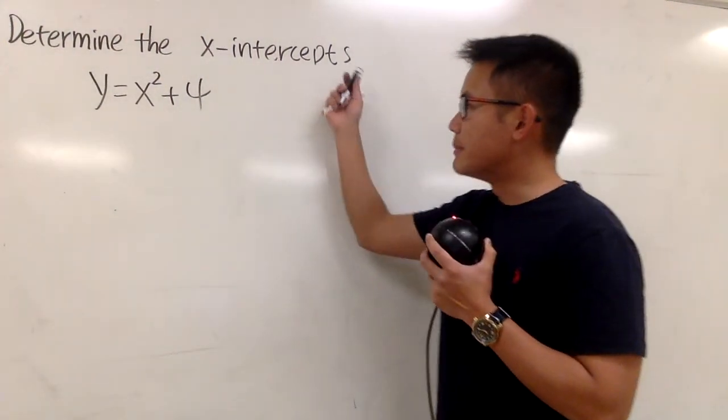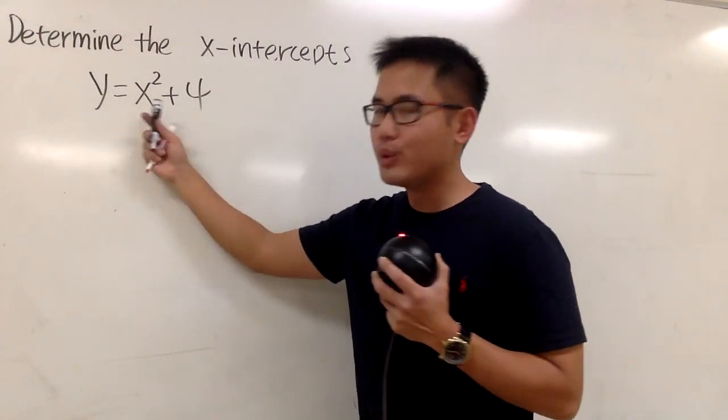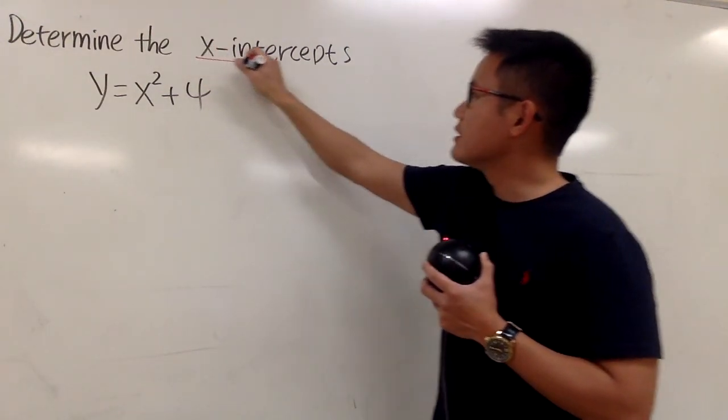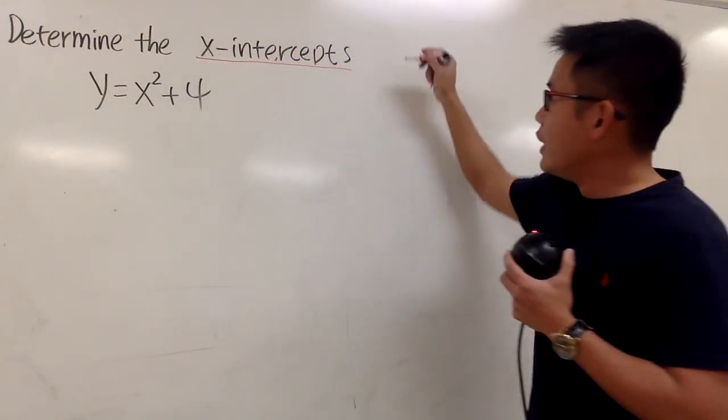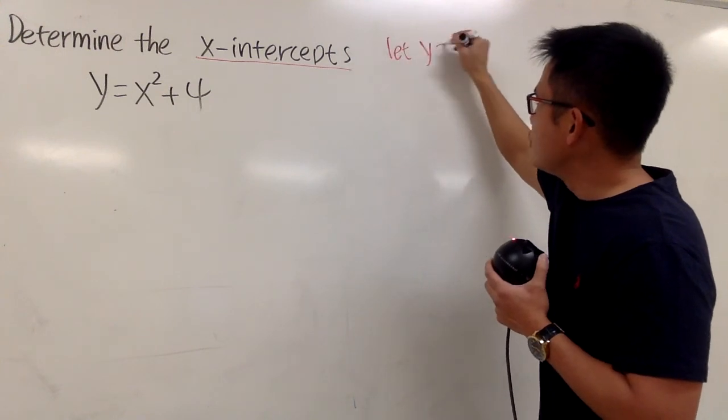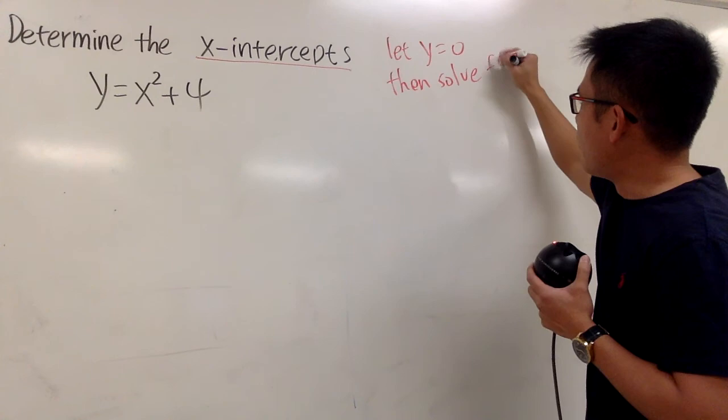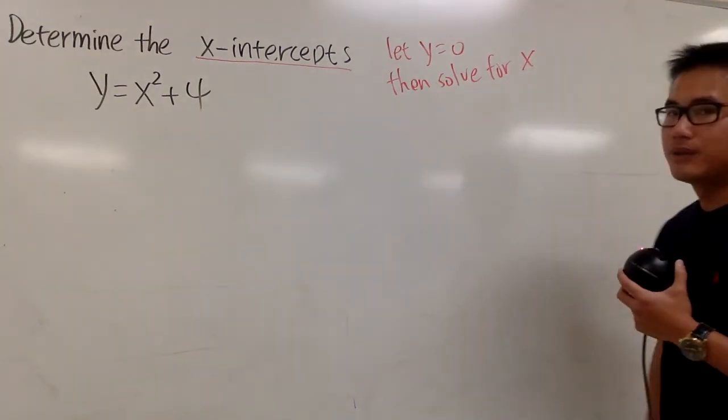We're going to find the x-intercepts of this parabola, y = x² + 4. Remember, whenever we want to find the x-intercepts, we first let y be 0, and then solve for x.